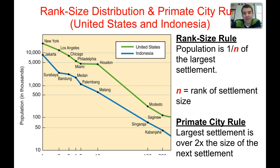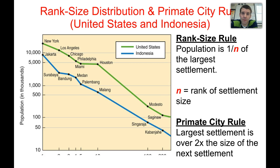The rank size rule is a general principle stating that a city's population will be one-nth of the largest settlement. So the second largest city will be half of the largest, the third biggest will be one-third, and so on. For example, New York City is approximately 20-some million people; Los Angeles is about 13 million — roughly half; and Chicago is around 8 million — about one-third. This shows that New York City and the United States generally fits the rank size rule of population distribution.